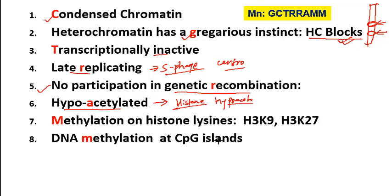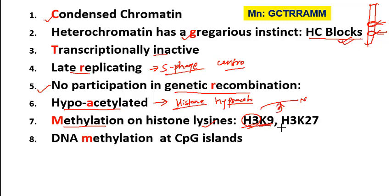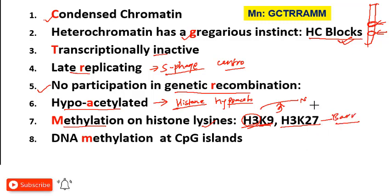The histones in heterochromatin are also hypermethylated, and hypermethylation causes them to become heterochromatin. Generally in heterochromatin, histone H3 lysine 9 (K9) is trimethylated. In the Barr body (inactive X chromosome), the inactivation is due to lysine 27 (K27) trimethylation. So the key lysine methylation sites are K9 generally and K27 in the Barr body.